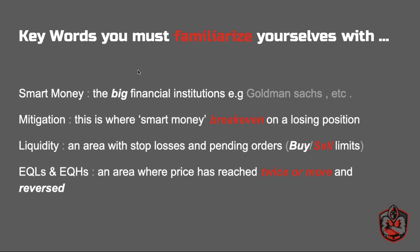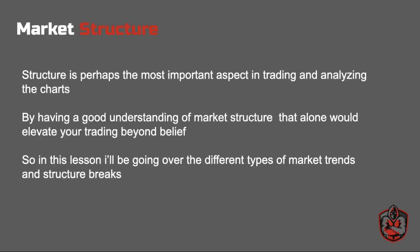Mitigation is essentially where smart money breaks even on their losing position. Liquidity is simply an area where there's a lot of stop losses and pending orders. Equal lows and equal highs is just an area where price has reached twice or more and reversed, such as support and resistance levels, double tops, and double bottoms.